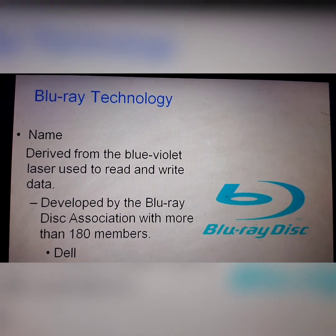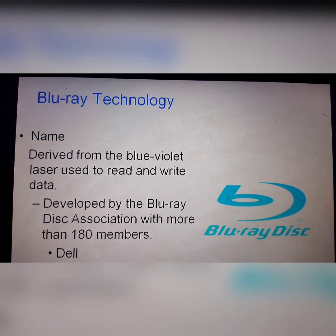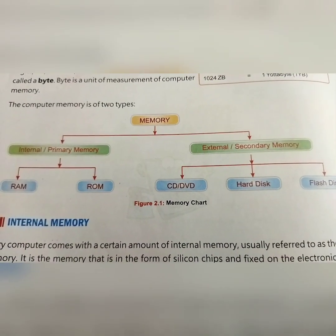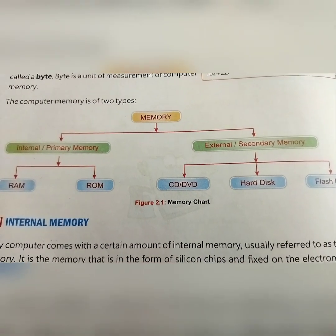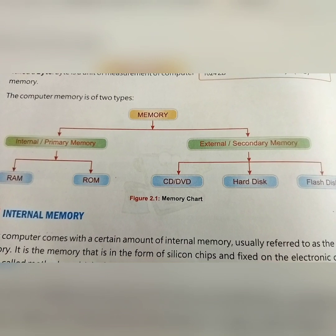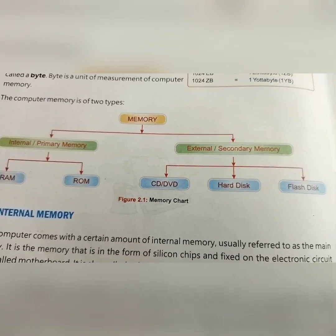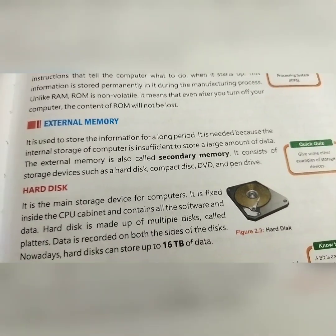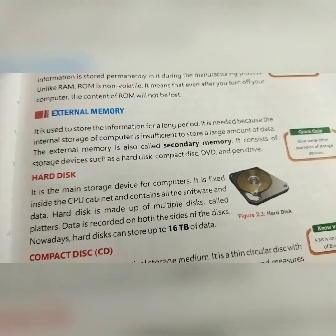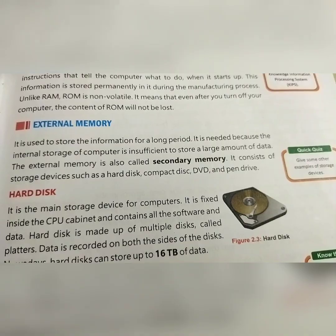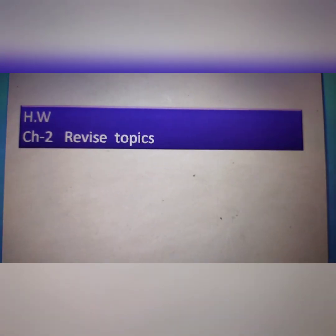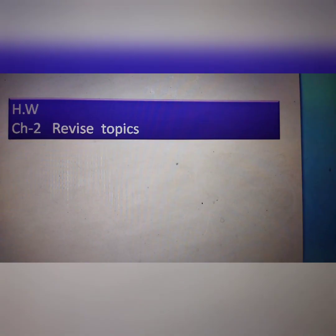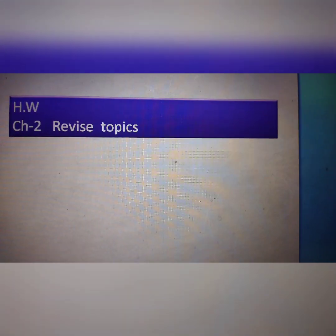Students, read and revise all these topics on Internal Memory and External Memory. Revise all this memory: the two parts of internal primary memory are RAM and ROM. Then secondary external memory includes CD, DVD, Hard Disk, and Flash Disk. External memory examples include Hard Disk, Compact Disk, and Digital Versatile Disk. Class 4, Chapter number 2 — revise all this topic. Thank you.